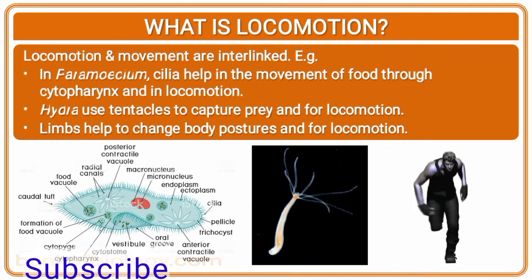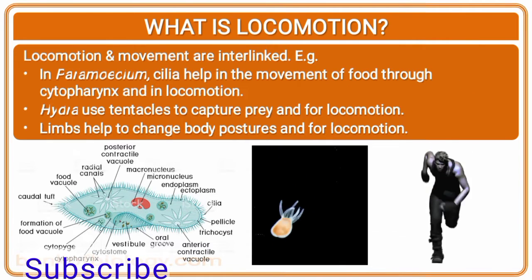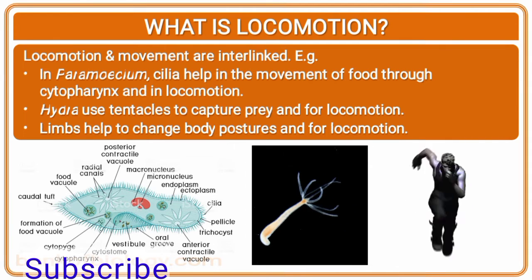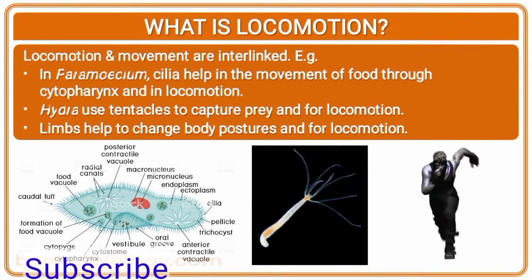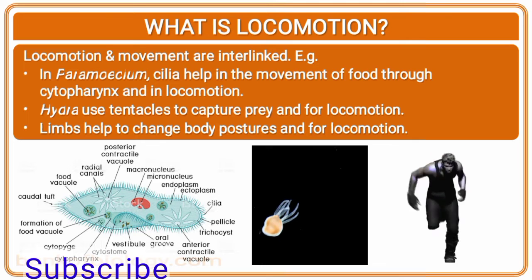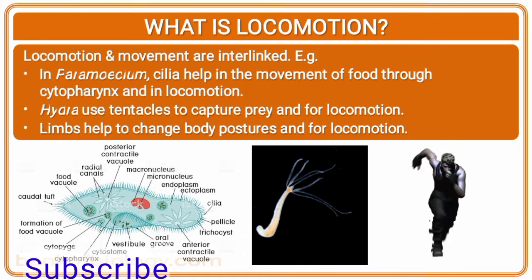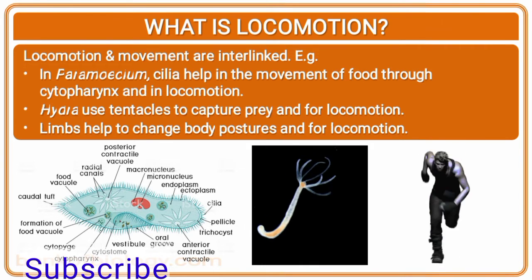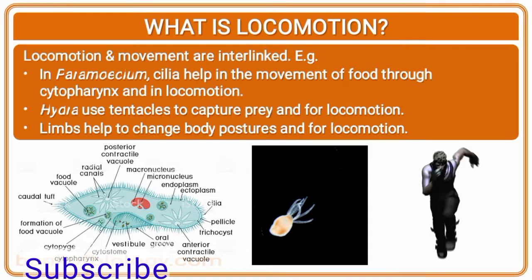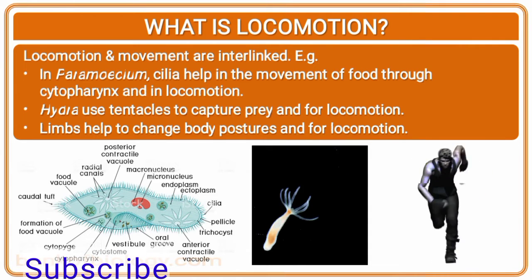Locomotion and movement are interlinked. For example, in paramecium, cilia help in the movement of food through the cytopharynx and in locomotion, whereas hydra uses tentacles to capture prey and for locomotion. Limbs help to change body postures and for locomotion in humans.